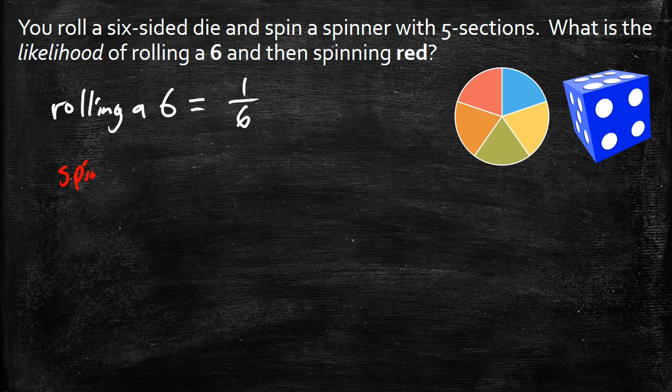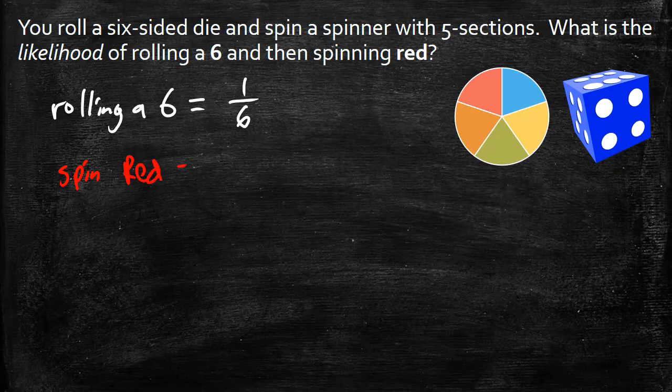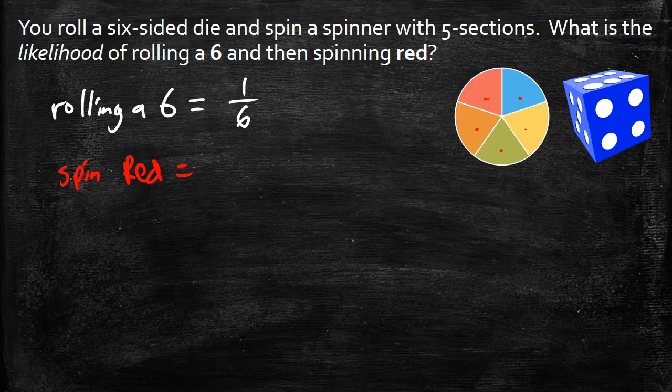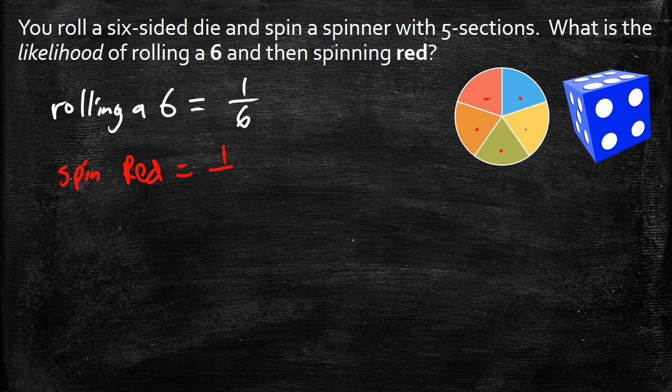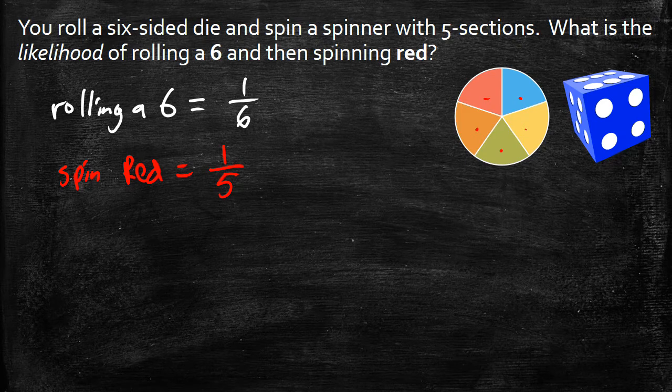Spinning red. There are one, two, three, four, five options. One of them is red, so I know I have one out of five options gives me the probability of spinning a red.